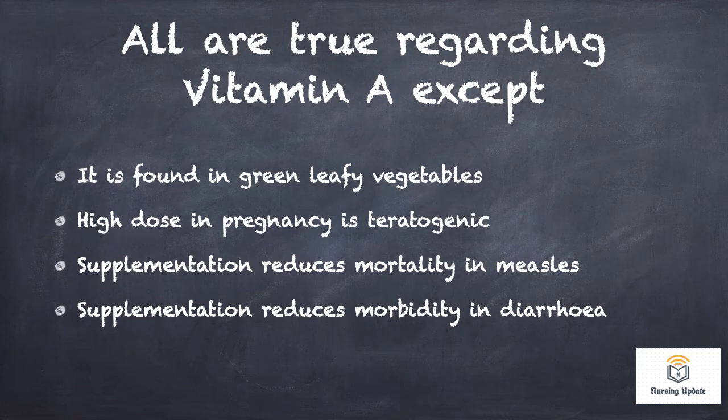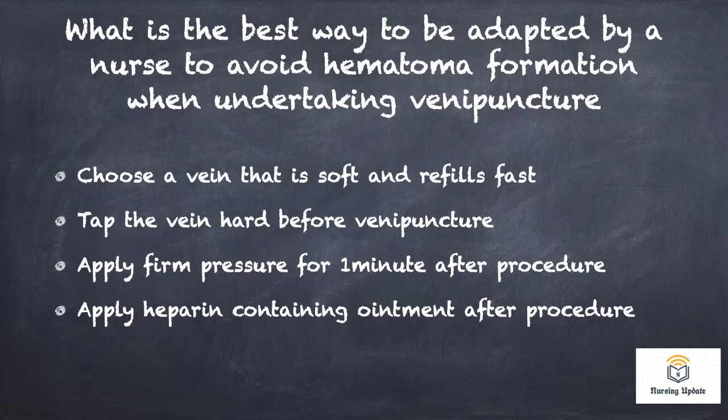Next MCQ: All are true regarding vitamin A, except? Options: it is found in green leafy vegetables; high dose in pregnancy is teratogenic; supplementation reduces mortality in measles; supplementation reduces morbidity in diarrhea. Answer is: it is found in green leafy vegetables.